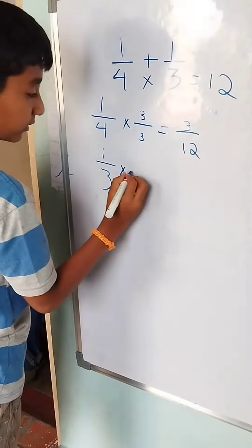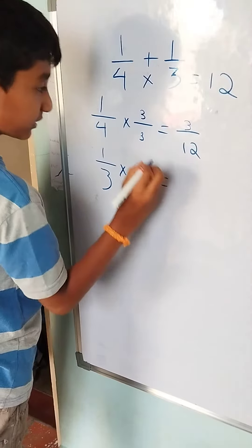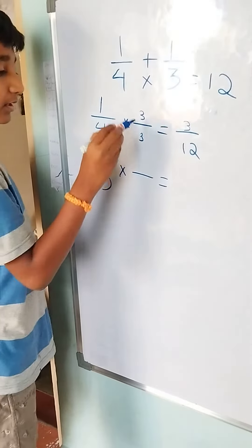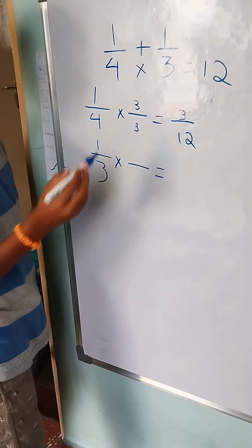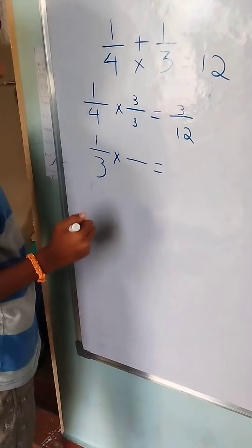Over here, the same thing which we followed over here. So the number which is written over here should be written over here by multiplying and find the equal in fraction.